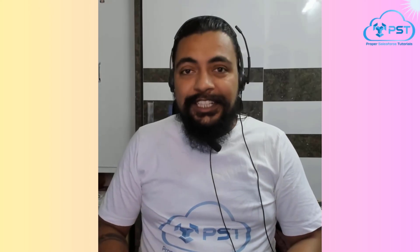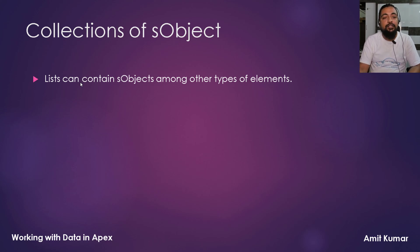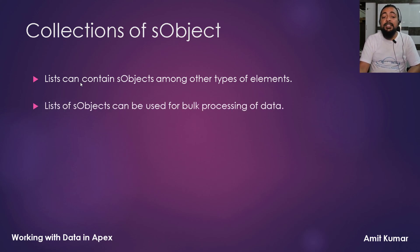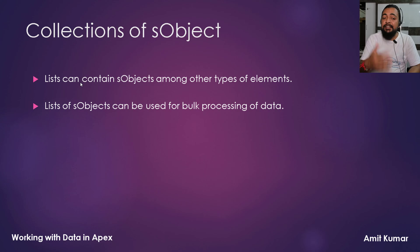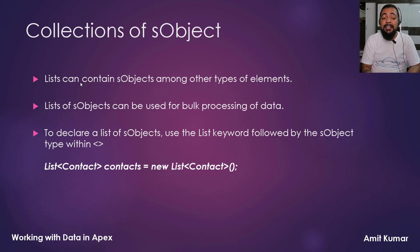Lists can contain SObjects among other types of elements. Just like we know how to create a list of a specific type, similarly we can create a list of SObject. A list of SObjects can be used for bulk processing of data. To declare a list of SObjects, use the list keyword followed by the SObject type within the angle brackets.